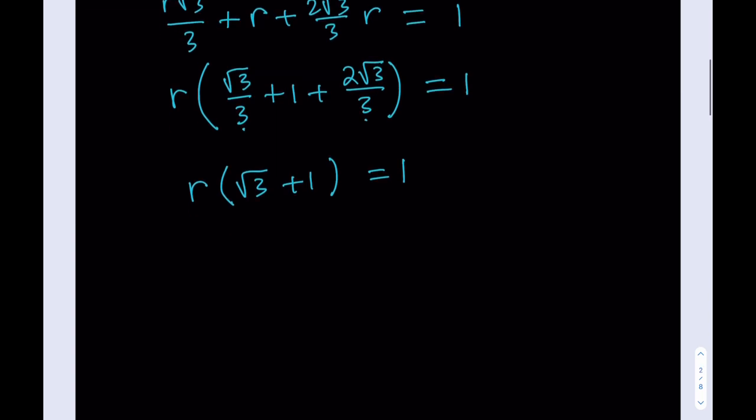And what I need to do is divide both sides by root 3 plus 1. And then, what we're going to do is rationalize the denominator.